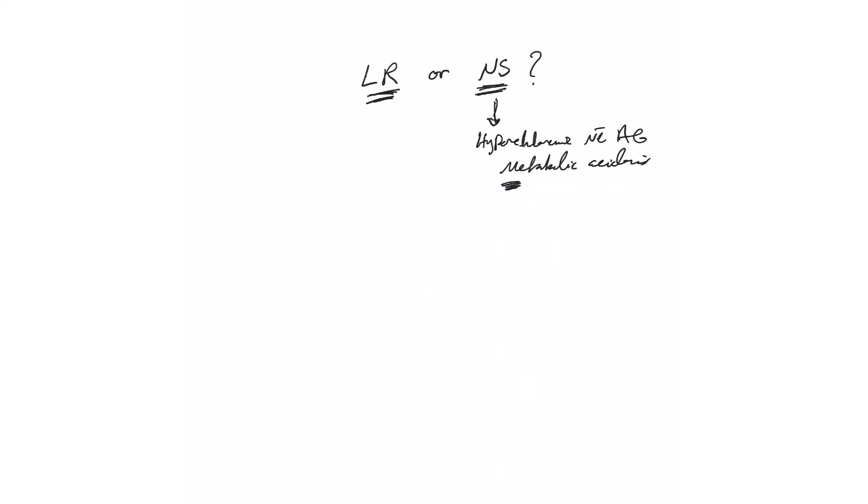Again, if you use vasopressor, vasopressor effectiveness is less with more acidosis. Theoretically you can say that's right, but the whole goal of giving volume is to restore hemodynamic stability and reverse the production of acids.